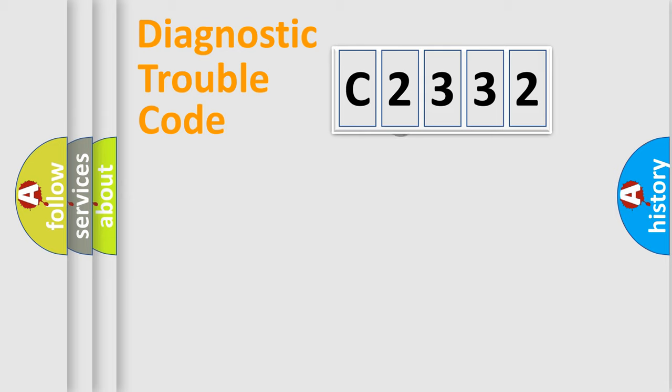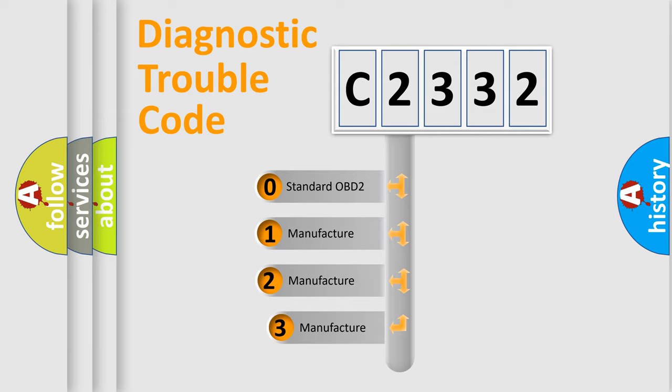Powertrain, body, chassis, network. This distribution is defined in the first character code.